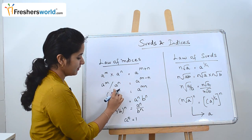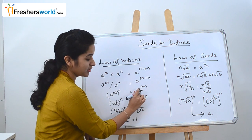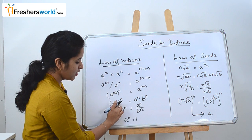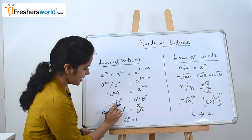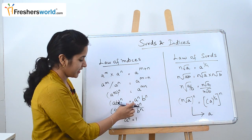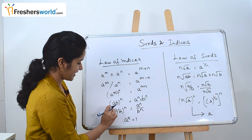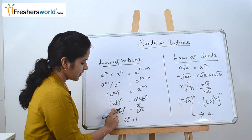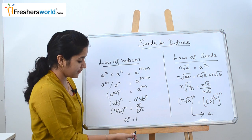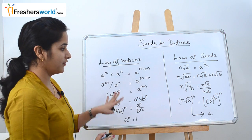Next, (a^m)^n is nothing but a^(m×n). Then (ab)^n can be written as a^n × b^n. Similarly, (a/b)^n can be written as a^n / b^n. And as we all know, a^0 is nothing but 1. These are the laws of indices.